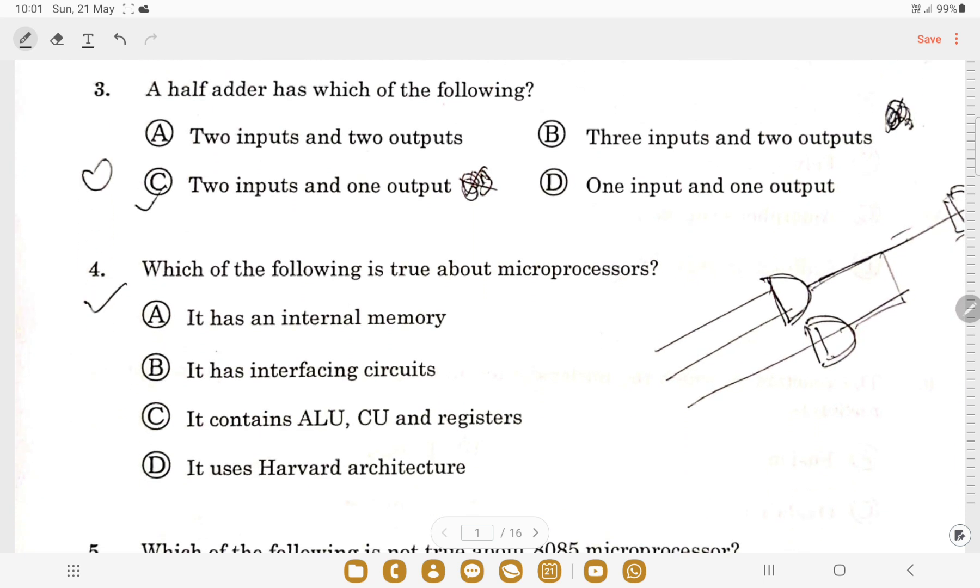Next question: a half adder has which of the following? When we draw a half adder, we can say it has a carry and a sum. If you draw it just like this, this is the carry part - it will be A into B, and this is the sum.